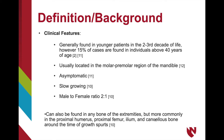The lesions are generally found in younger patients during the second to third decade of life. However, 15% of cases are found in individuals above 40 years of age. They are most commonly located in the molar-premolar region of the mandible, present asymptomatically, are slow-growing, and tend to be found in males more commonly than females. The extremities can also be affected during growth spurts.